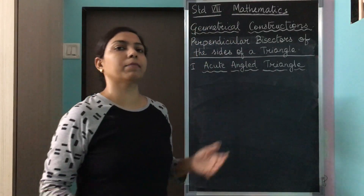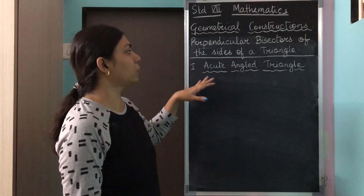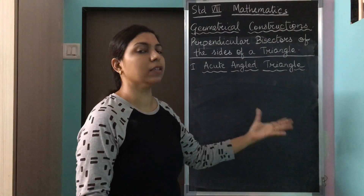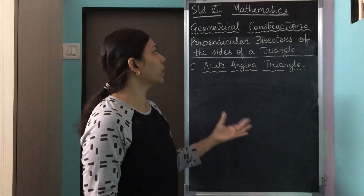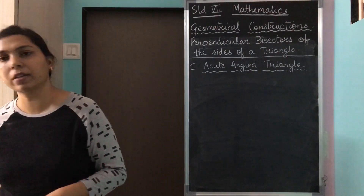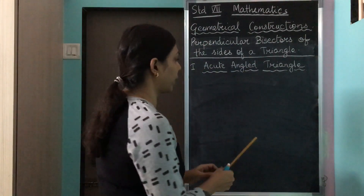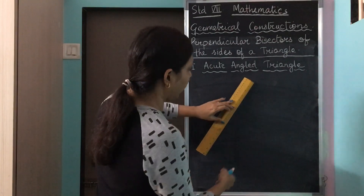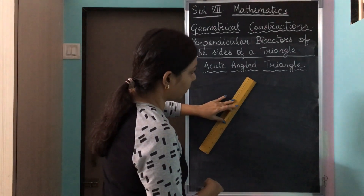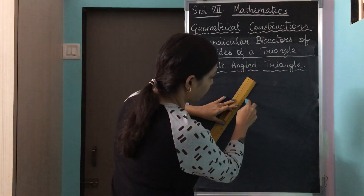We move to the next part of our construction wherein we will be drawing an acute angle triangle and we will be drawing the perpendicular bisectors for all the sides of that particular triangle. First I will make an acute angle triangle. Your acute angle triangle has all angles less than 90 degrees.